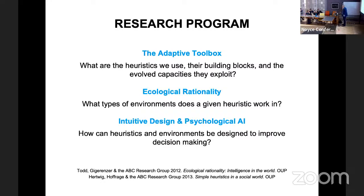The second question is prescriptive: when should we use heuristics and when not, and which heuristic? Under uncertainty, it's heuristics all the way down — there's no option. The real question is what is smart: is it smart to imitate peers when searching for a research topic, or should I think for myself? Can we prove mathematically or show through computer simulations under which conditions, for instance, 1/N works or where imitation works?